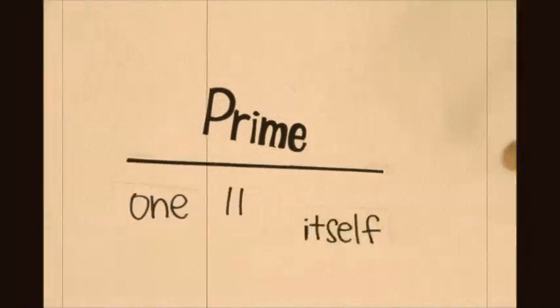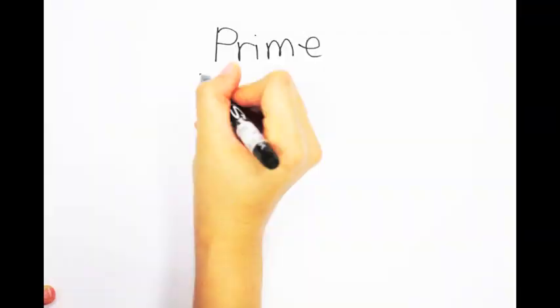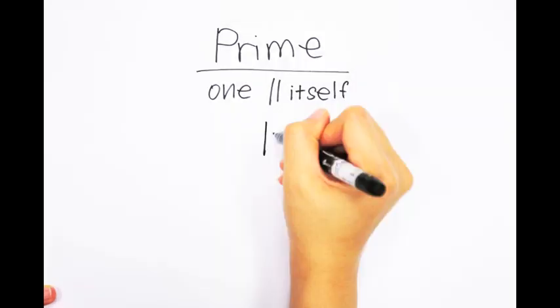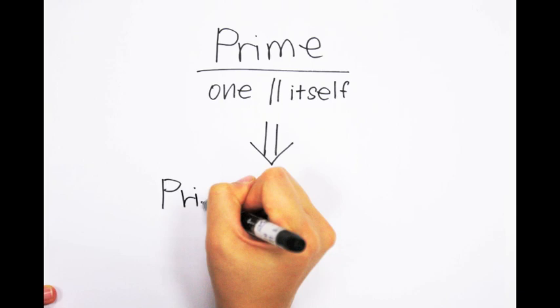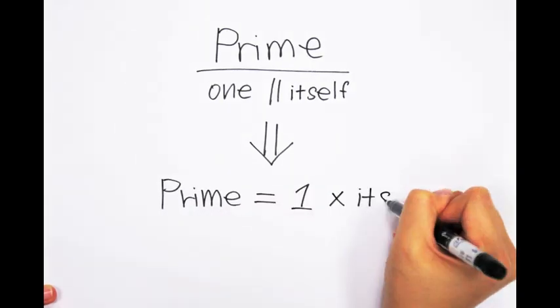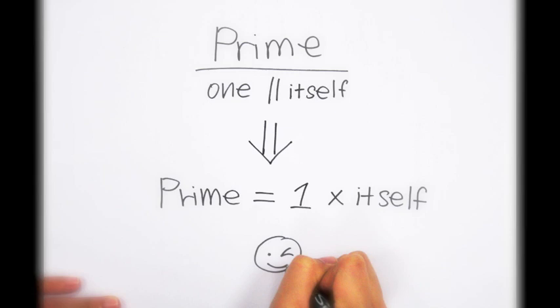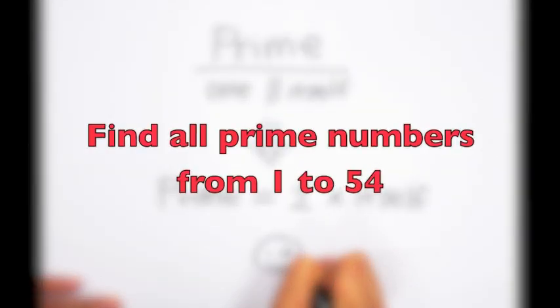First, we will need to modify our definition of prime numbers. We originally defined prime numbers using the concept of divisibility. We now change the definition to the concept of factorization. A number is a prime number if it only has one and itself as its factors. Let's say we want to find all prime numbers between 1 to 54.